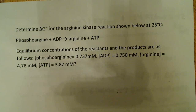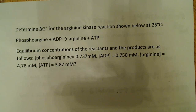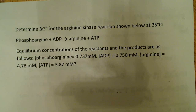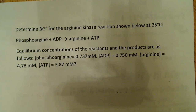Phospho-arginine is at 0.737 millimoles, ADP at 0.750 millimoles, arginine at 4.78 millimoles, and ATP at 3.87 millimoles.